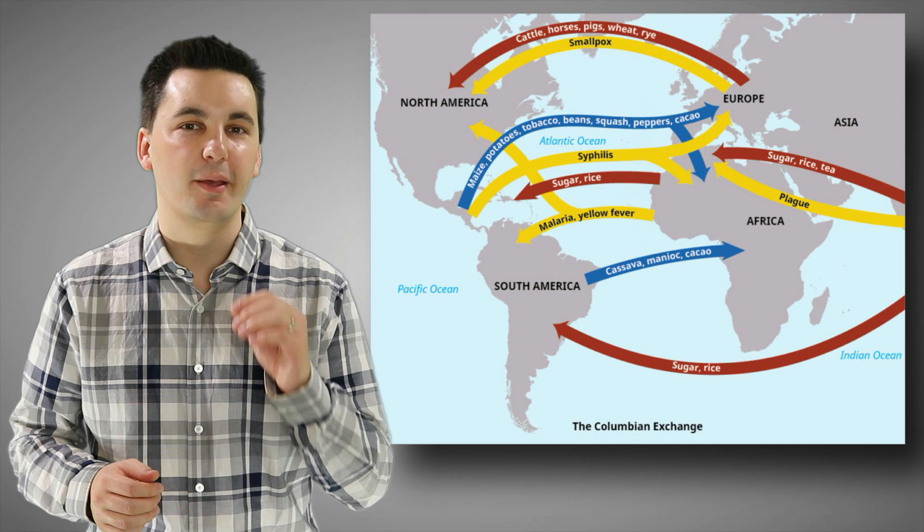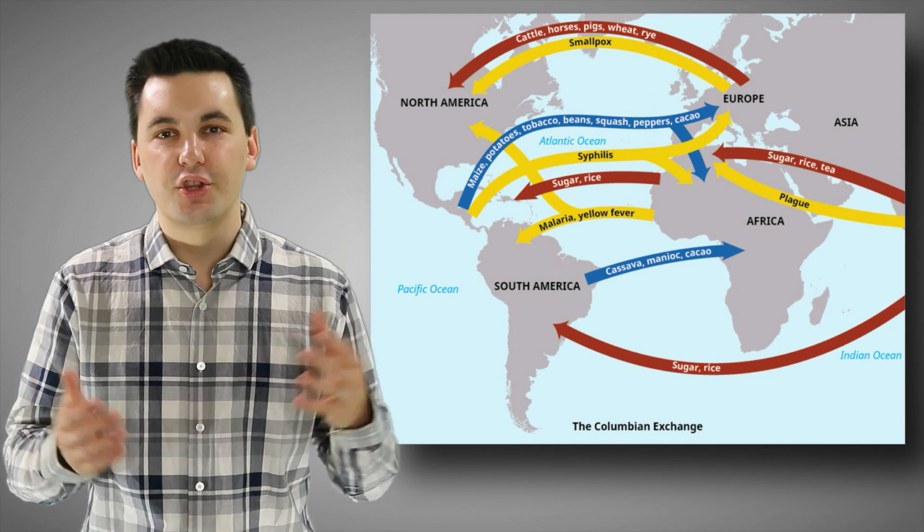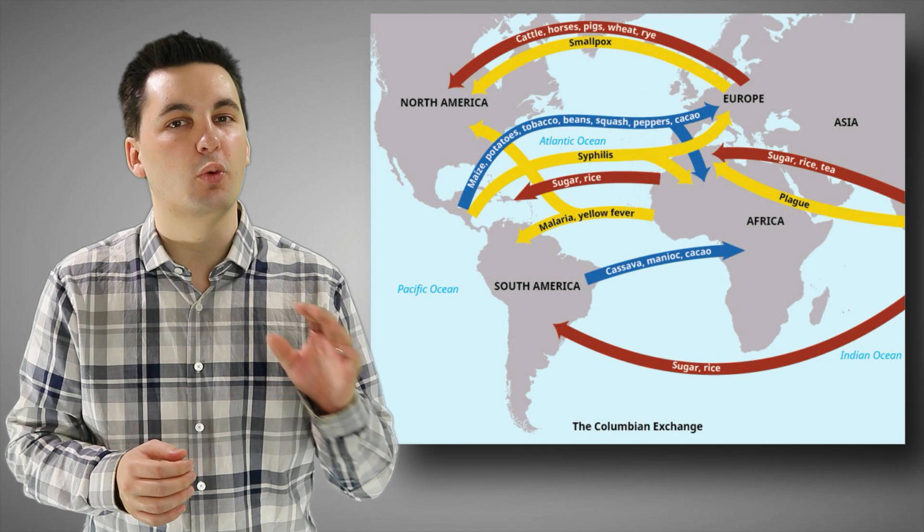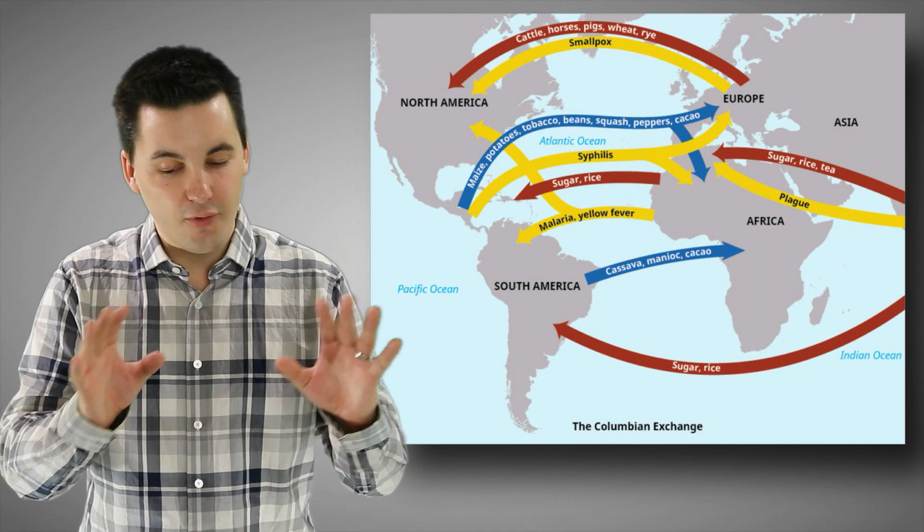If we look over to the Americas, we can see the impact of the Columbian Exchange with the diffusion of different animals, plants and unfortunately diseases between the new world and the old world forever reshaping society. Now while trade was a major reason why we saw the diffusion of different agricultural products and practices occur, it wasn't the only factor.